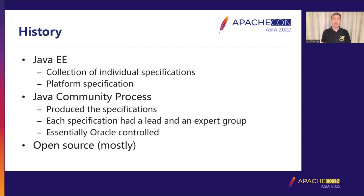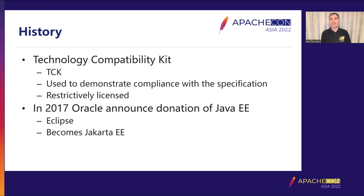Some specs I worked on were genuinely collaborative. But there were instances where the spec lead who worked for Oracle wanted a particular change, none of the expert group did, but the lead has the final say, so into the specification it went. A large proportion of the specifications were open source, and all of the APIs produced were open source. However, the spec document itself wasn't, and neither were the TCKs — the technology compatibility kits used to demonstrate compliance. These were restrictively licensed, and the ASF had access to a subset of them for a while, then lost it, and got it back after 2017.